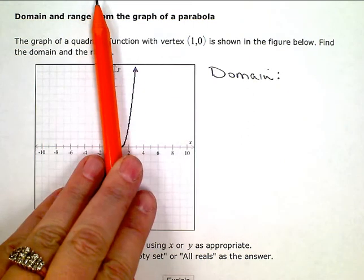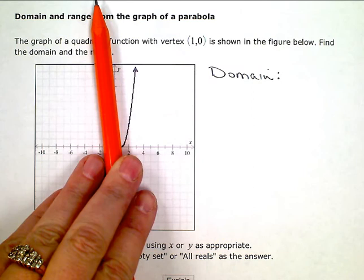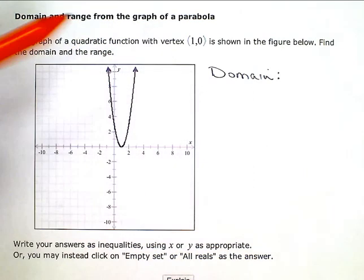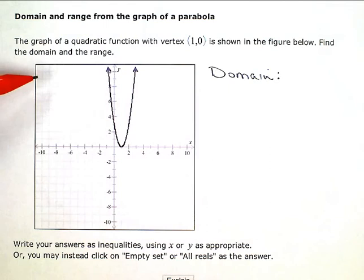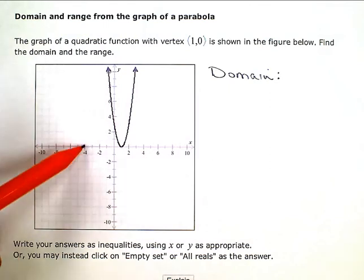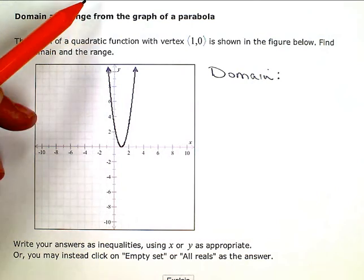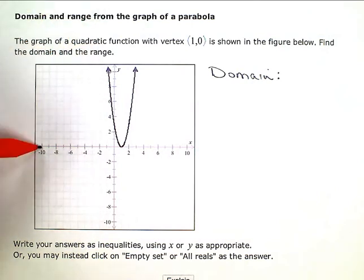So at negative 4, I'll be able to go up and find the graph somewhere. It'll just be way up here. And at negative 10, it'll be even further up. But the graph will be there somewhere because it's going to—